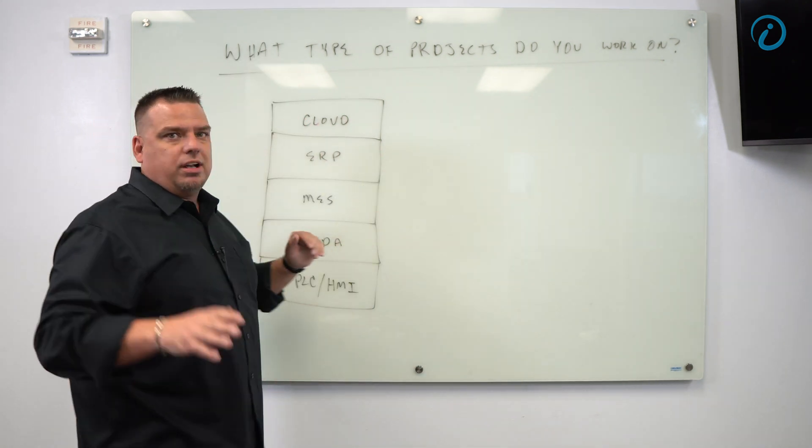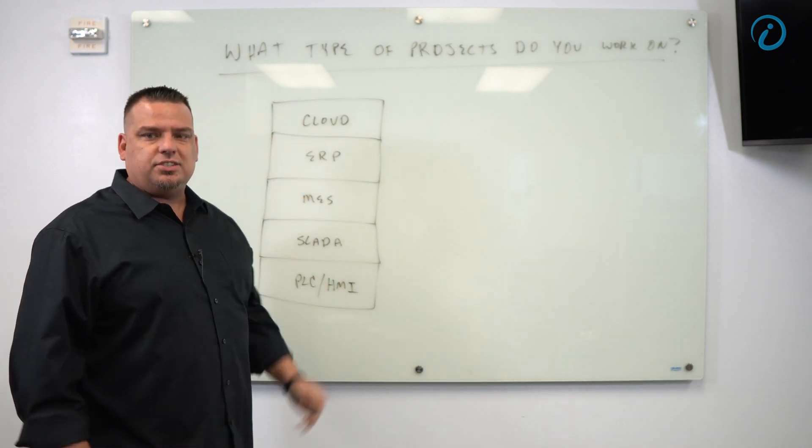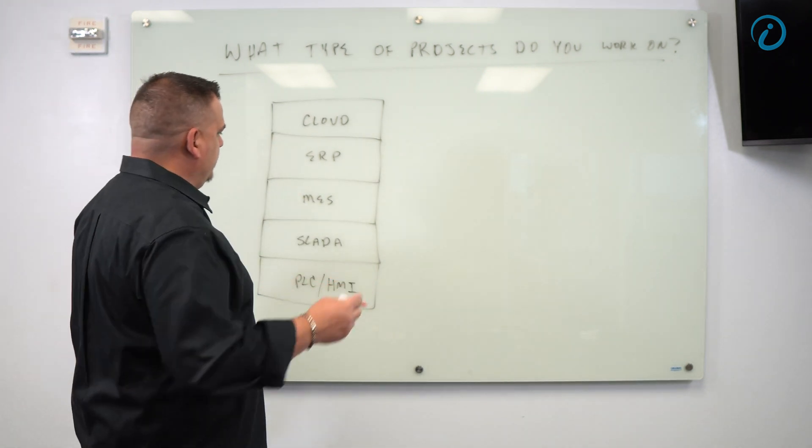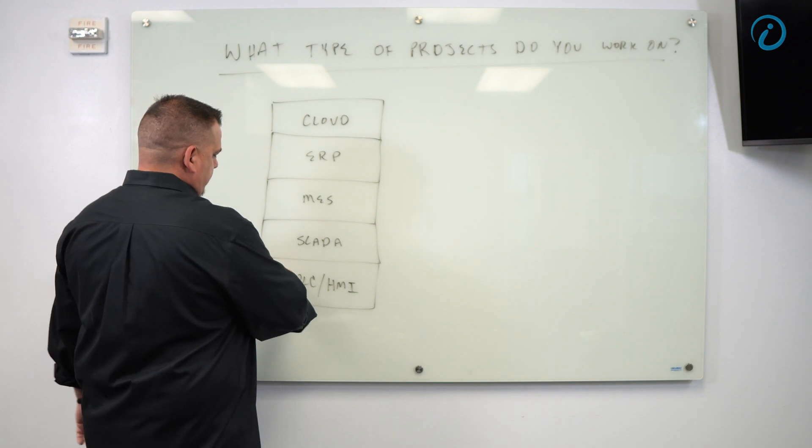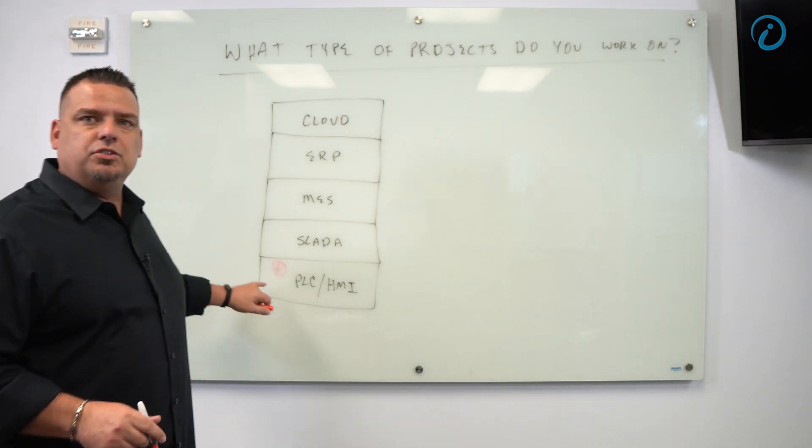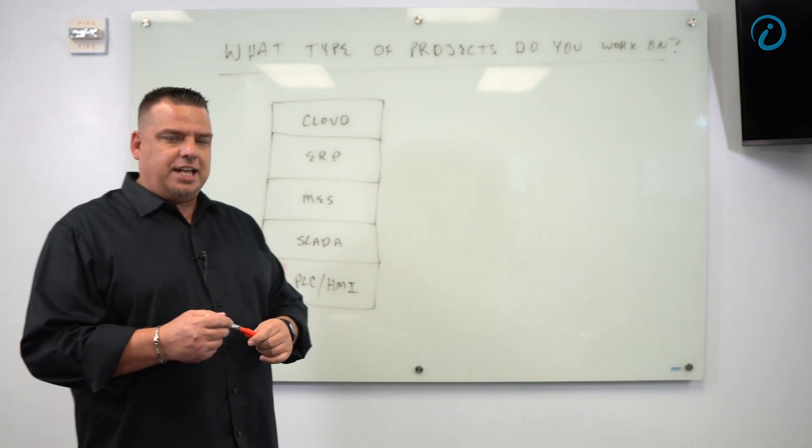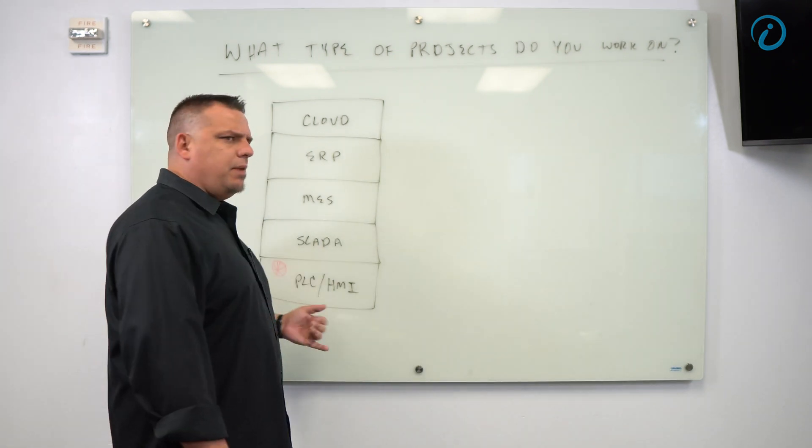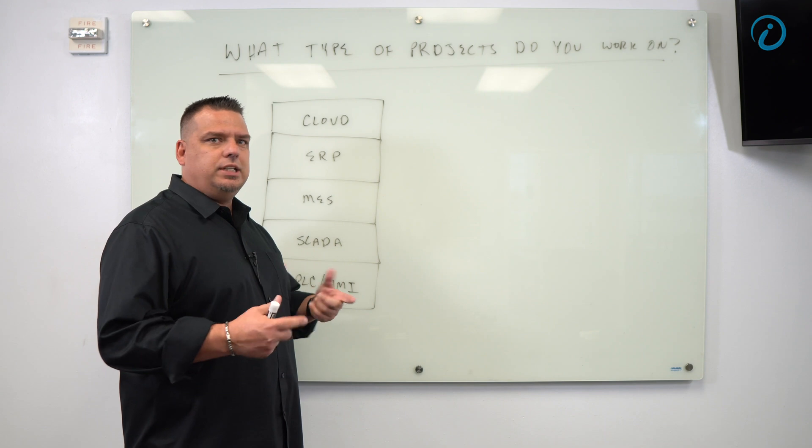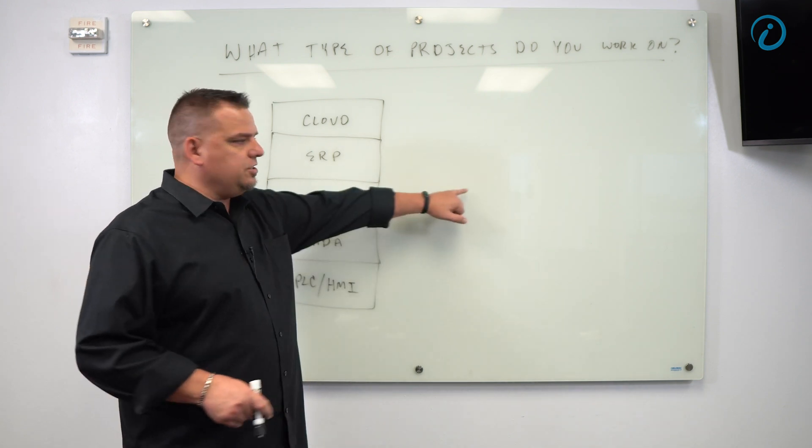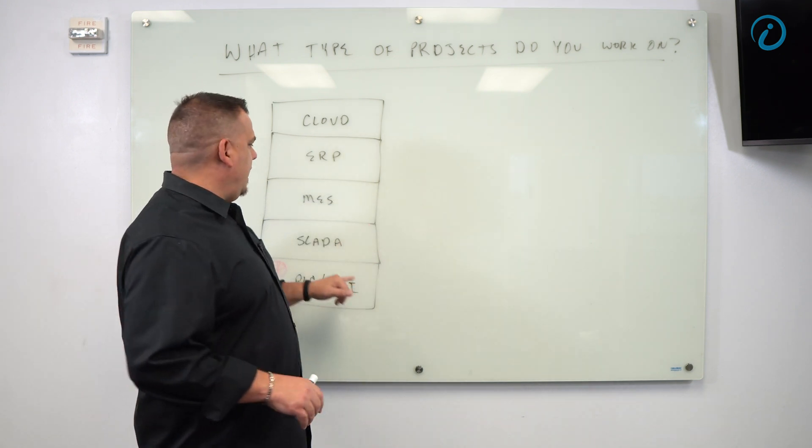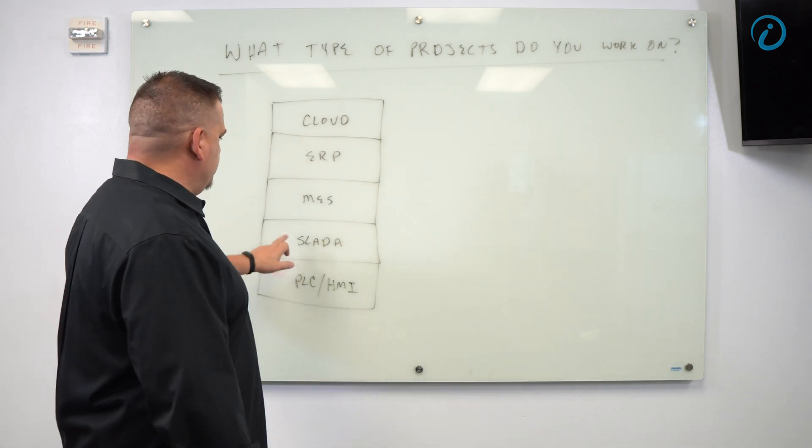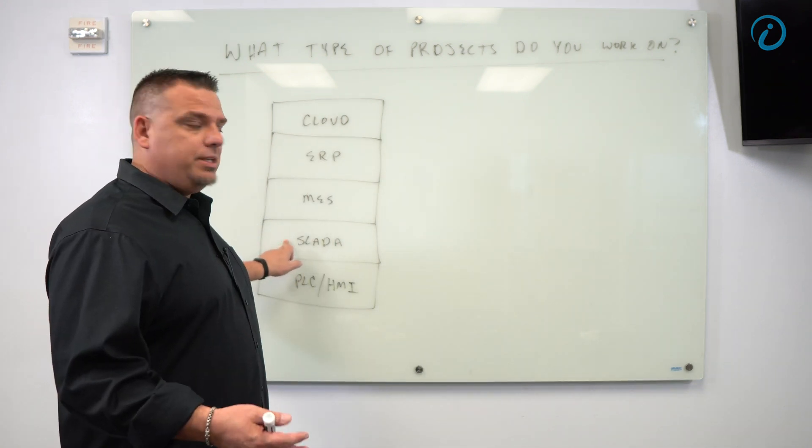The type of projects that we work on cover the whole automation stack. So you guys should be familiar with this by now. Probably what we do the least amount of is this, and I would say most integrators do the majority of their work at the PLC HMI layer. We don't really do a whole lot of PLC HMI stuff. We do modify a lot of PLC code to put in objects that are going to be in our unified namespace so that our other applications can consume them.